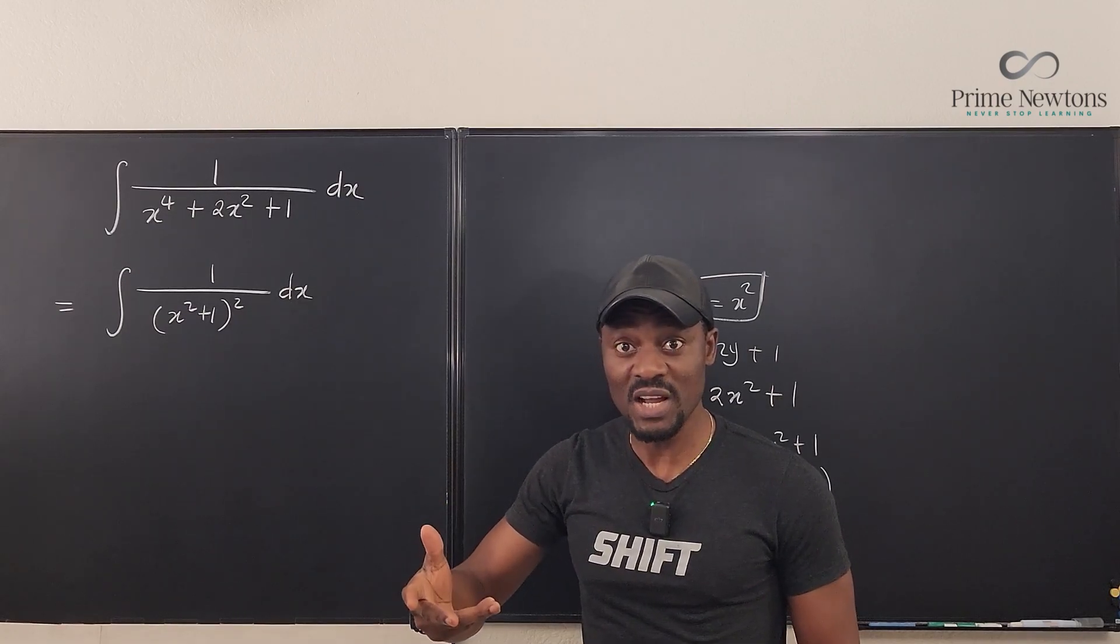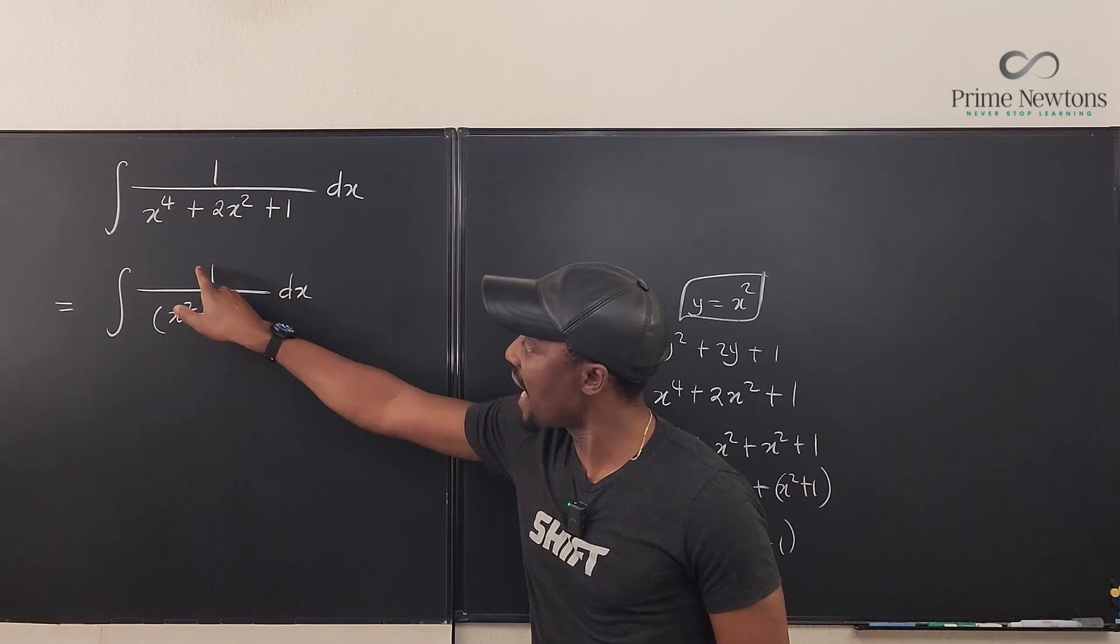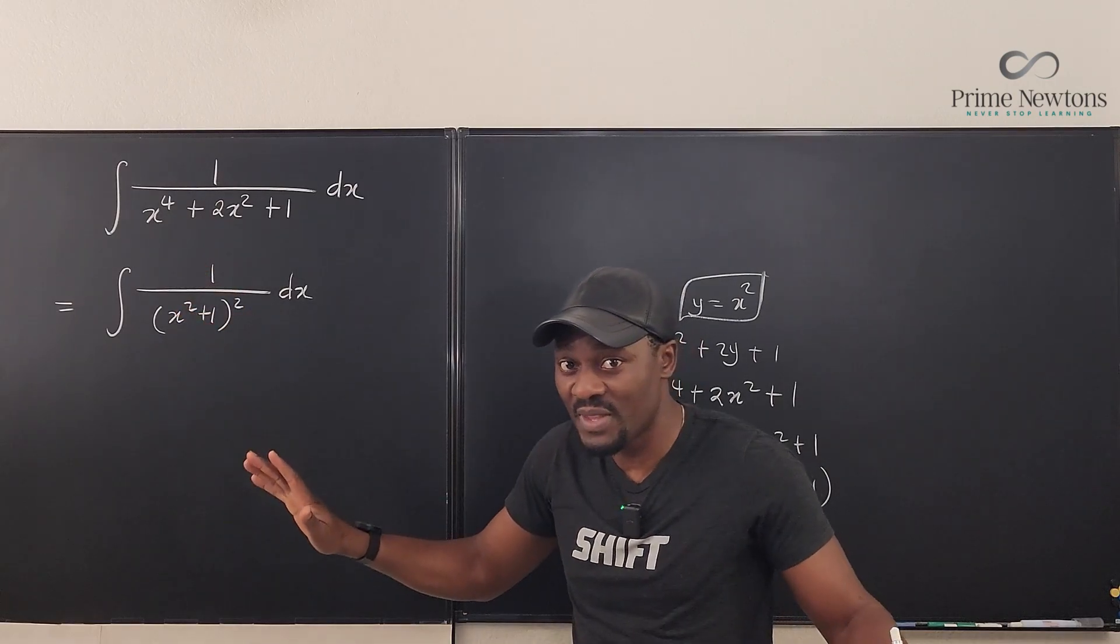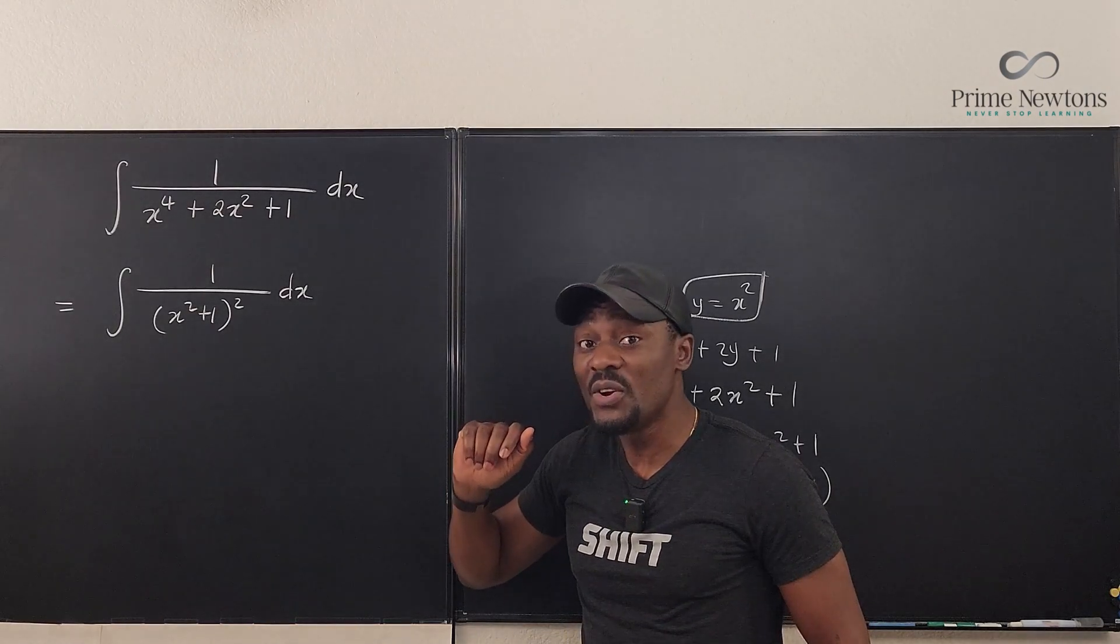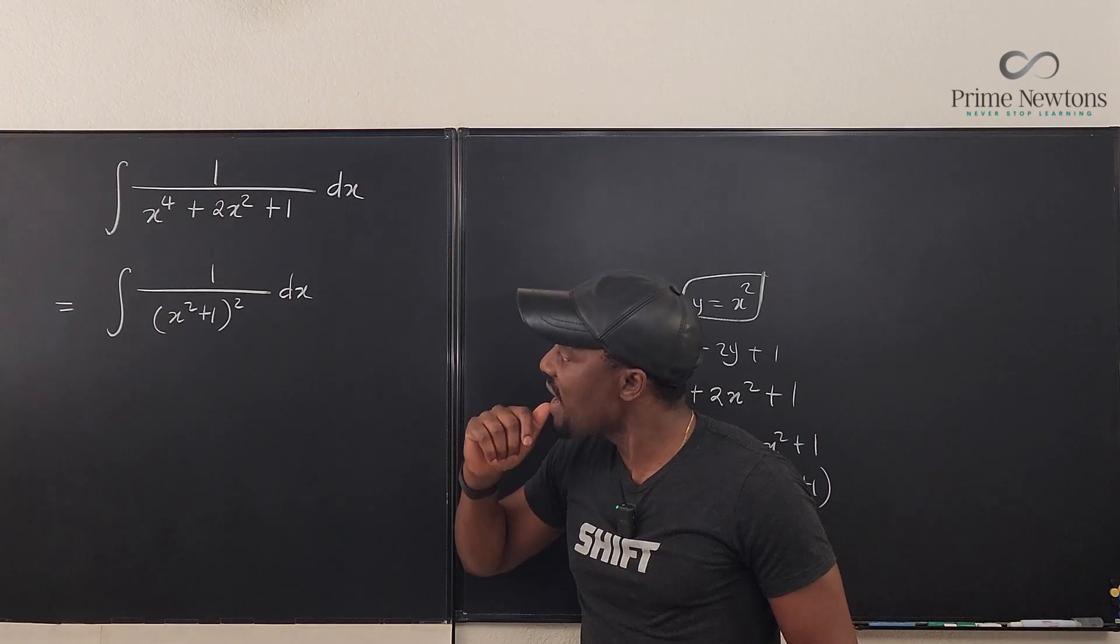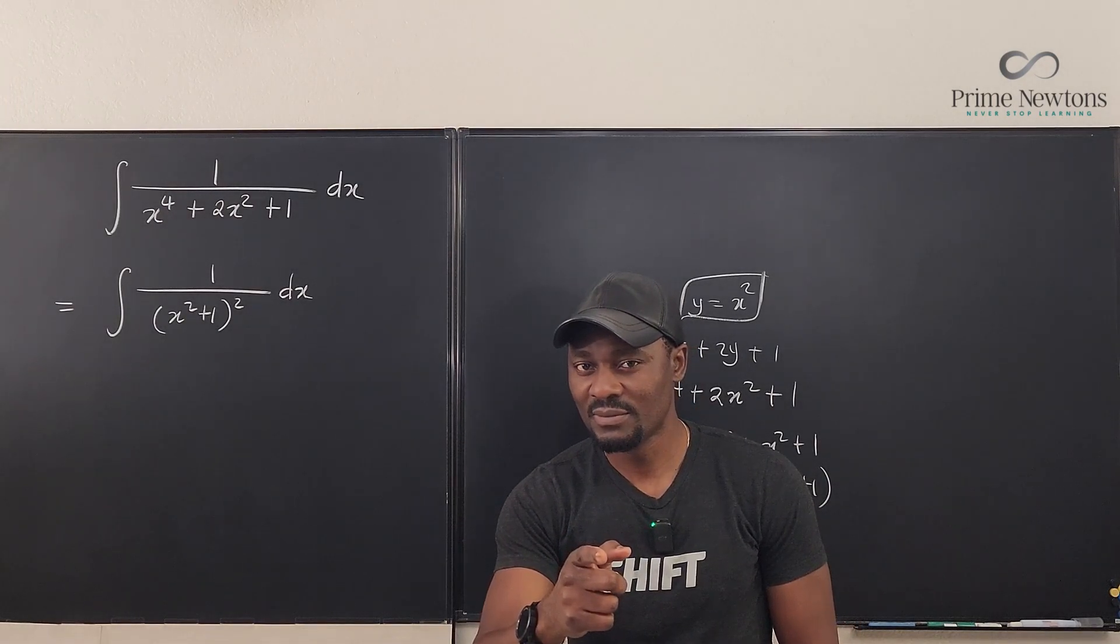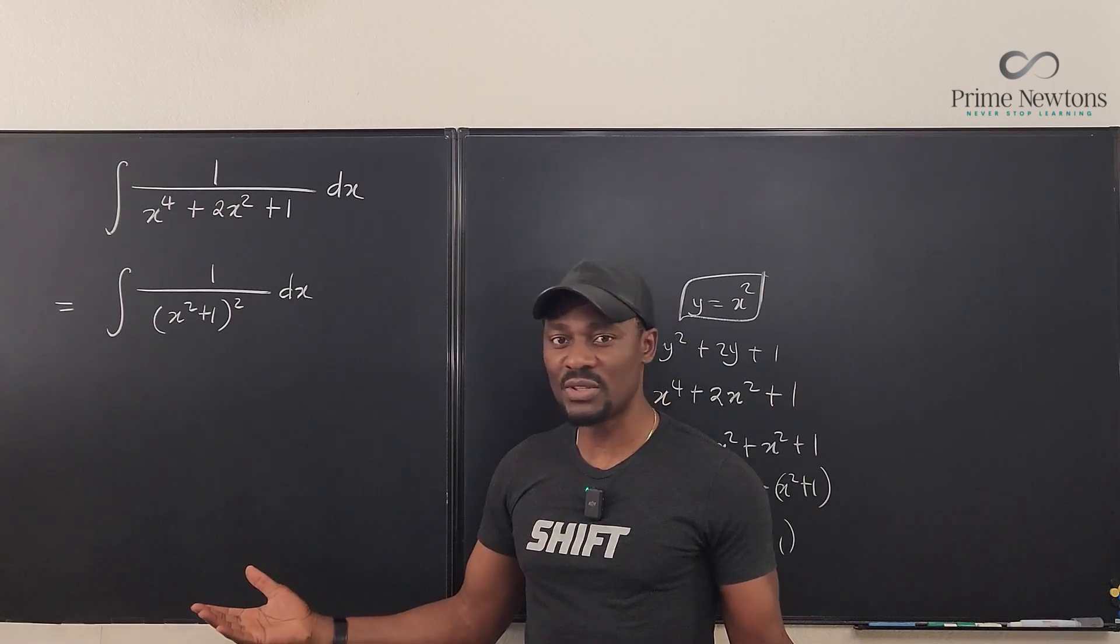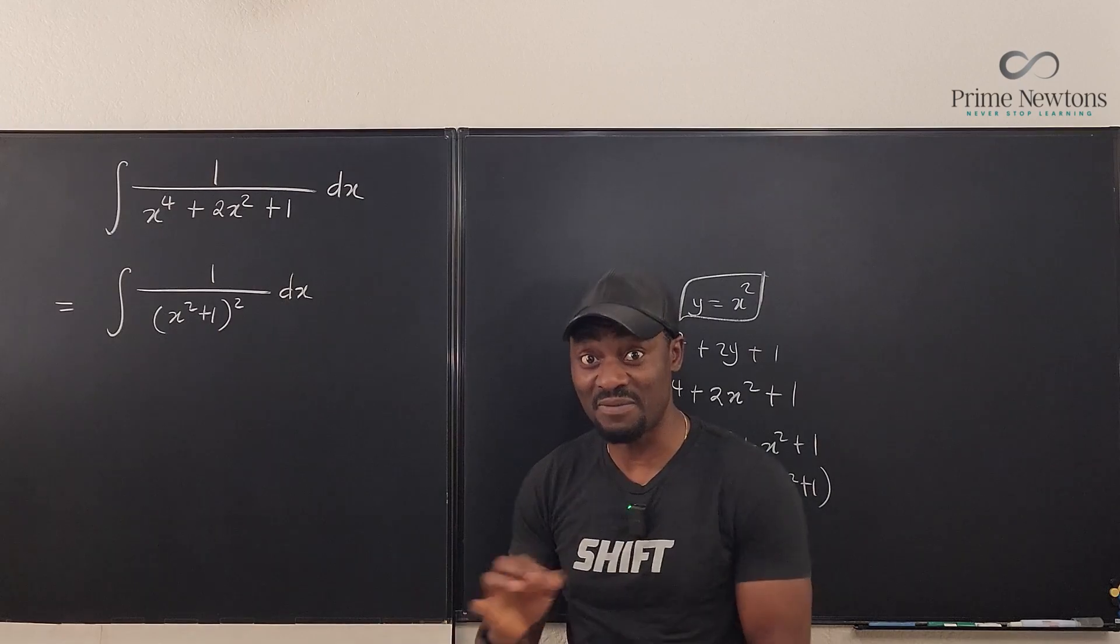U-substitution still does not help because the derivative of x^2 + 1 still contains x and there is no x up here, so we got to give up on that one. It doesn't look like there's anything we could do, but what if we do a trig substitution, or can we do partial fraction decomposition? What exactly is the way out of this? The fastest way out?